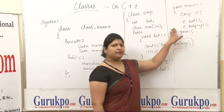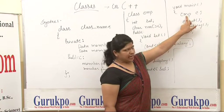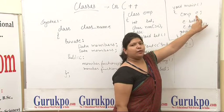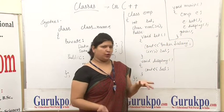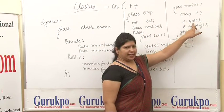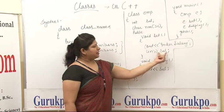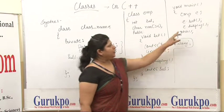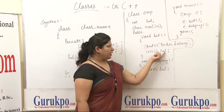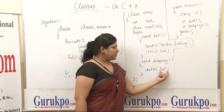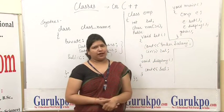In the main function, we write 'emp e', where 'emp' is the class name and 'e' is the object. We can create as many objects of a class as we want. Then 'e.set' calls the set function to assign the salary value, and 'e.display' displays whatever value the user set. Finally, 'getch()' ends the program.